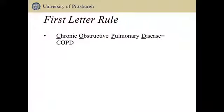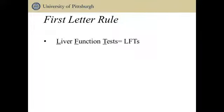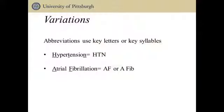Abbreviations using the first letter rule commonly identify diseases and diagnostic tests. For example, chronic obstructive pulmonary disease is COPD, or liver function tests are LFTs. In most cases, these letters are pronounced separately as letters. Some abbreviations do not follow the first letter rule — sometimes key letters or key syllables form the abbreviation. For example, hypertension is abbreviated using HTN, or we see the term atrial fibrillation abbreviated as either AF or AFib.